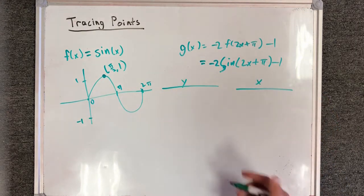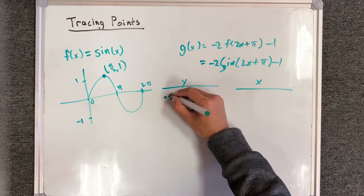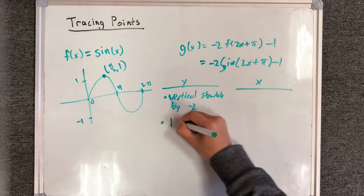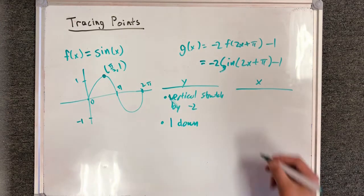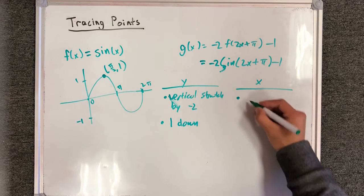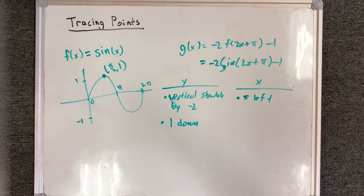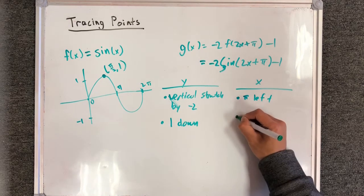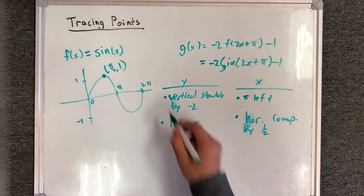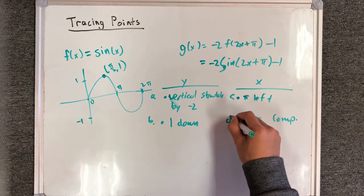For the y transformations: the first one is going to be a vertical stretch by a factor of negative 2, and then we're going to move it 1 unit down. For the x transformations, I have 2 of them: 2x gives a horizontal compression by 1 half, and plus pi shifts pi units to the left. Remember, for x transformations it's the opposite of what we do to y. So the first x transformation we apply is shifted pi to the left — we always shift for x before we stretch. The next one is horizontal compression by 1 half. Let's label these transformations A, B, C, and D.